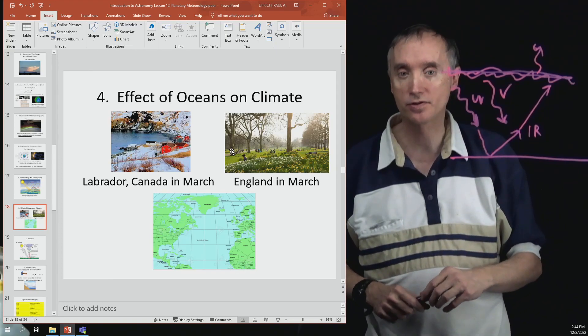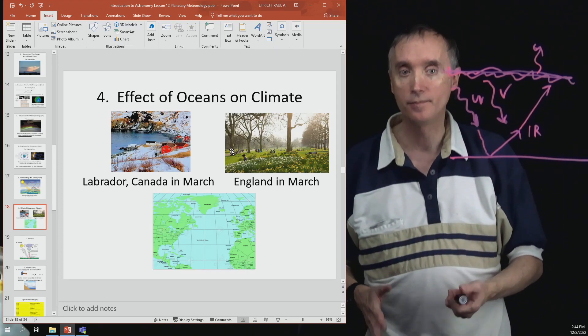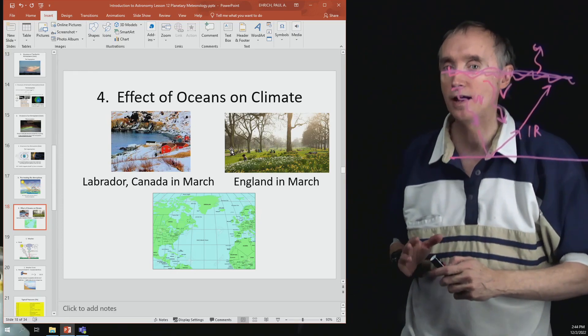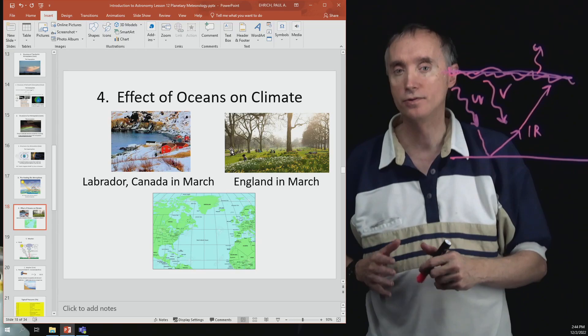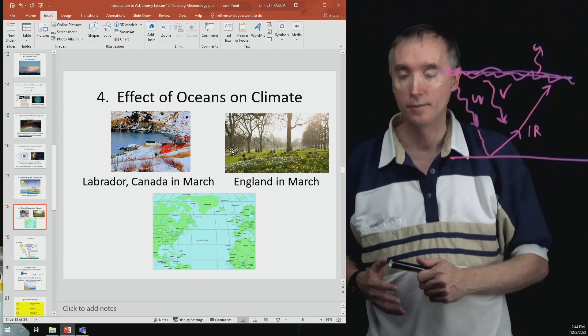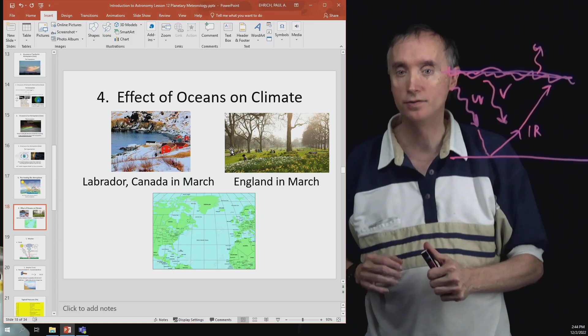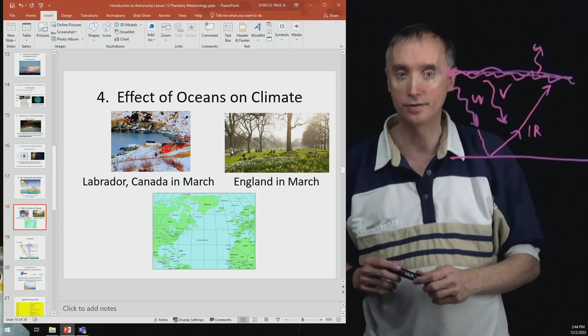During the winter time, when England should be cold, that water gives off its heat that it's been storing all summer long and it keeps England warm. So anytime that you have a planet that has large amounts of water, that's going to help to moderate the climate so that it's not so cold and it's not so hot.